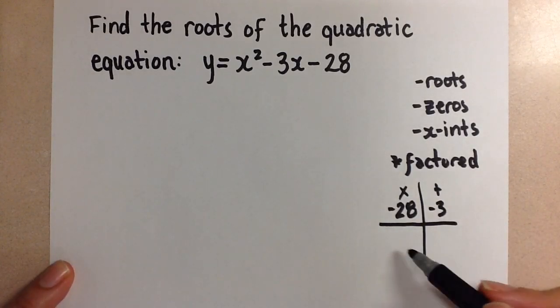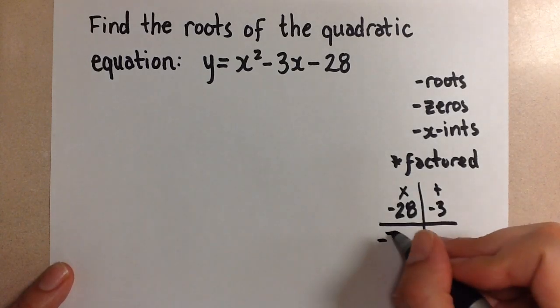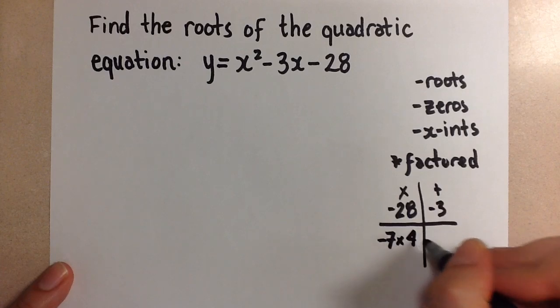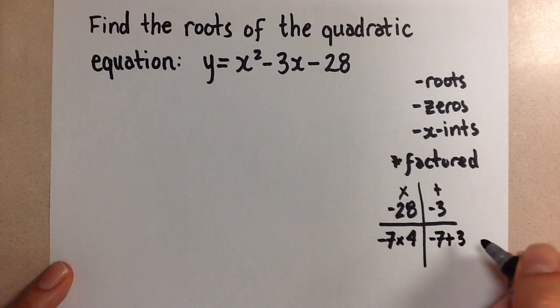You can go through all of your options to find those numbers. Those numbers, I'll tell you, will be negative 7 and positive 4. When we add them, then we get negative 3.